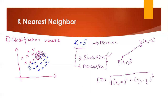Manhattan distance works differently. Instead of directly calculating the straight-line distance, we create a right-angle triangle and calculate the two side distances separately — the horizontal distance plus the vertical distance. The sum of those two sides gives us the Manhattan distance. Currently we are working with Euclidean distance, but you can also use Manhattan distance.